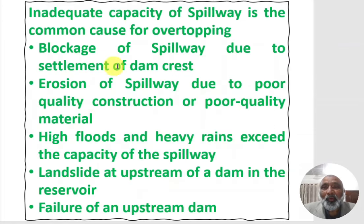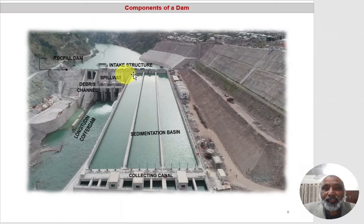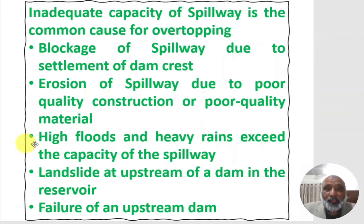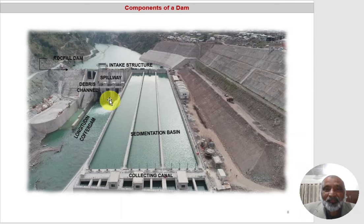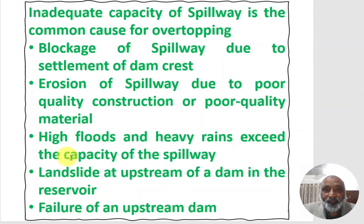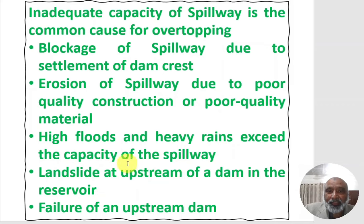Another reason is blockage of the spillway due to settlement of the crest. If the crest settles down due to some defect, it will cause blockage of the spillway. Also, erosion of the spillway due to poor quality construction or poor quality material can cause damage to the spillway. High floods and heavy rains can exceed the capacity of the spillway if it was not designed according to the maximum probable flood.